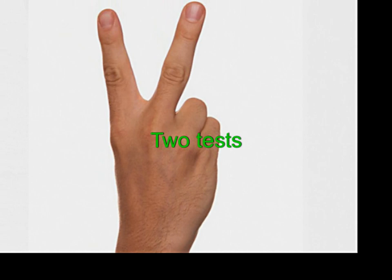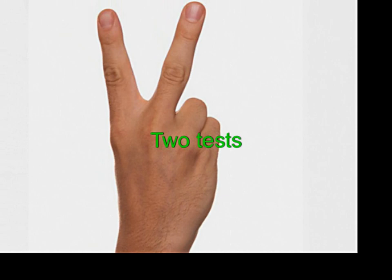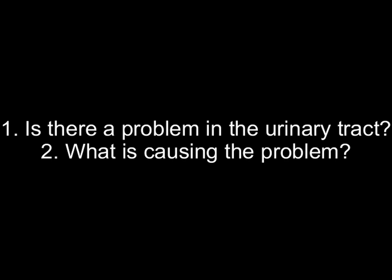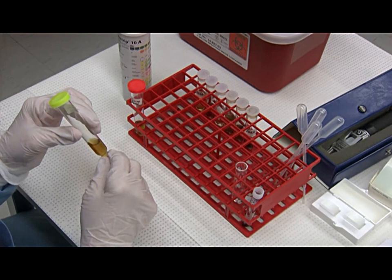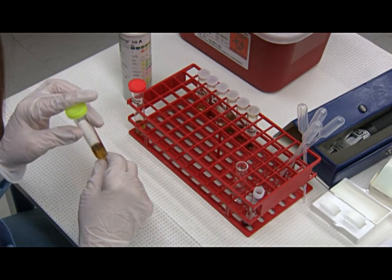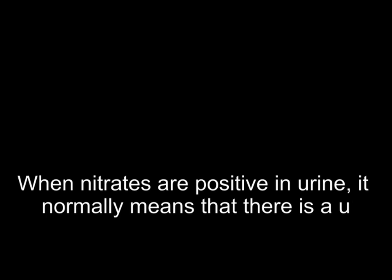There are two initial tests usually done together on urine to confirm first if there is a problem in the urinal tract, and second, what is causing the problem. These are the nitrite test and leukocyte esterase test. Leukocytes produce an enzyme called esterase that can be detected when a test strip is dipped into urine overcrowded by these cells. When nitrites are positive in urine, it normally means that there is a urinary tract infection caused by gram-negative bacteria.